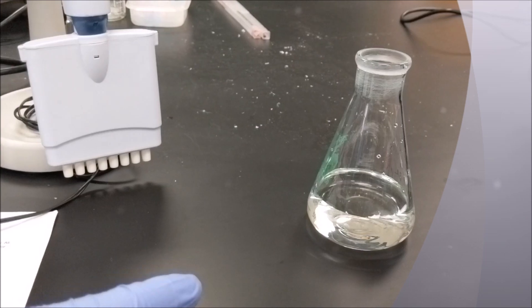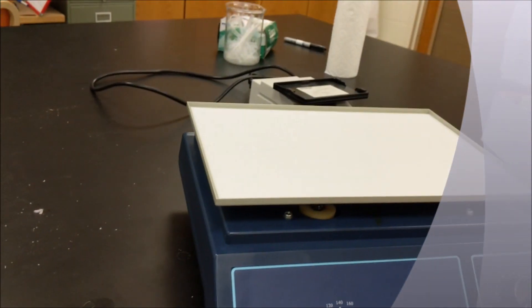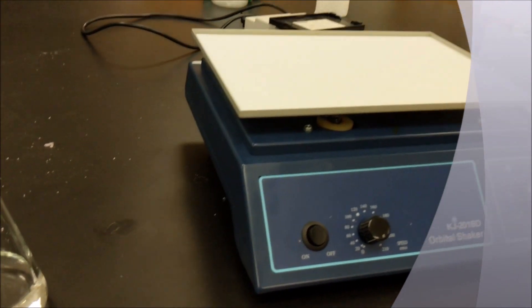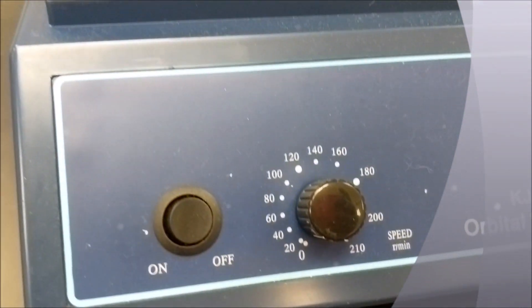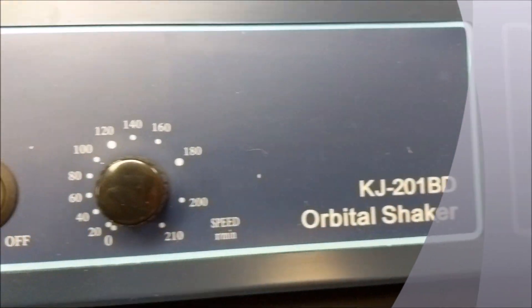If you want to mix a liquid solution using an orbital shaker, you must begin by ensuring that the orbital shaker is turned off and that all knobs are in their lowest positions.